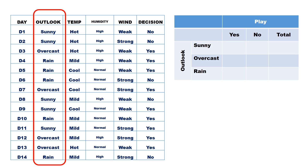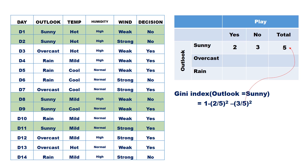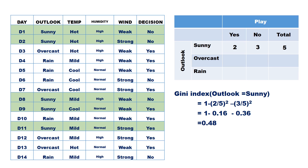Let us first take Outlook. Outlook has three values: sunny, overcast, and rain. There are five records with outlook equal to sunny; out of five, two are yes and three are no. The Gini index for outlook equal to sunny is 1 minus (2/5)² minus (3/5)², where 5 is the total records with outlook=sunny, 2 is the count with decision yes, and 3 is the count with decision no. This equals 1 minus 0.16 minus 0.36, which is 0.48.